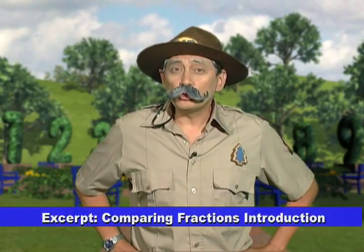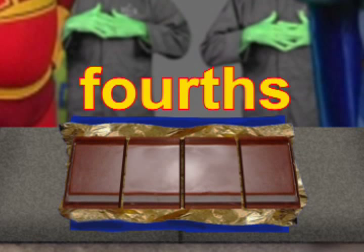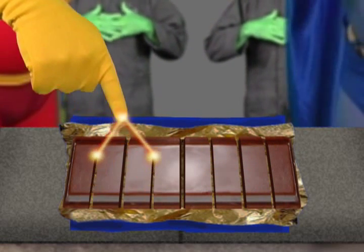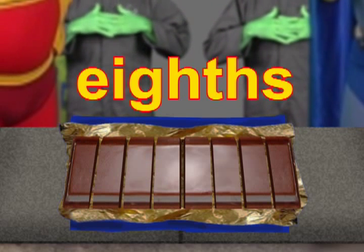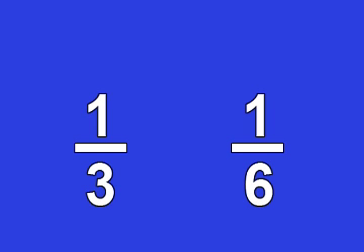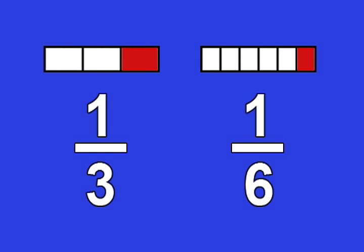If your friend offered you one-fourth of a candy bar or one-eighth of a candy bar, which would be larger? One-fourth would be larger. Remember when the denominator cut the candy bar into fourths, then into eighths? When the candy bar was cut into more equal pieces, each piece got smaller. What would be larger — one-third or one-sixth? One-third.